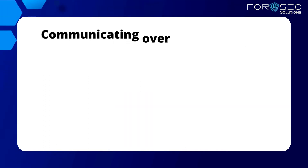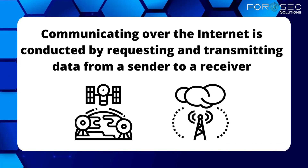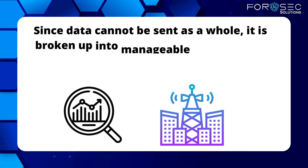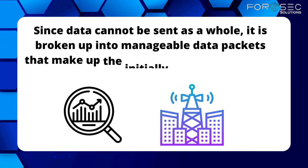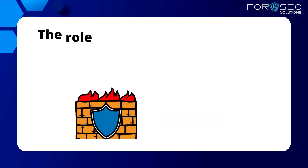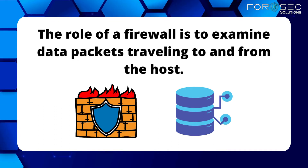Communicating over the internet is conducted by requesting and transmitting data from a sender to receiver. Since data cannot be sent as a whole, it is broken up into manageable data packets that make up the initially transmitted entity. The role of a firewall is to examine data packets travelling to and from the host.